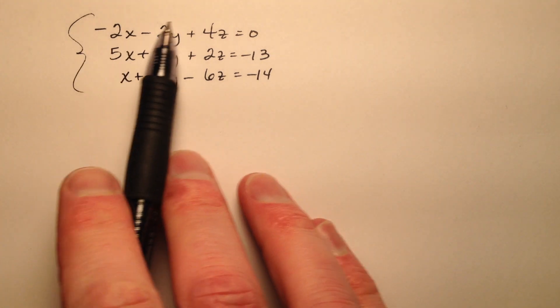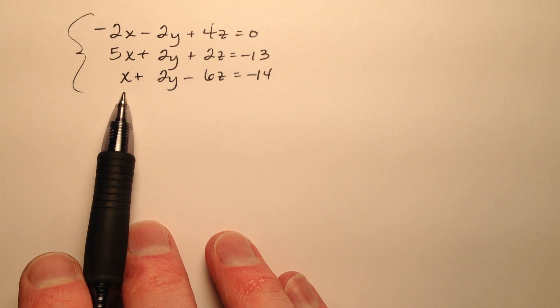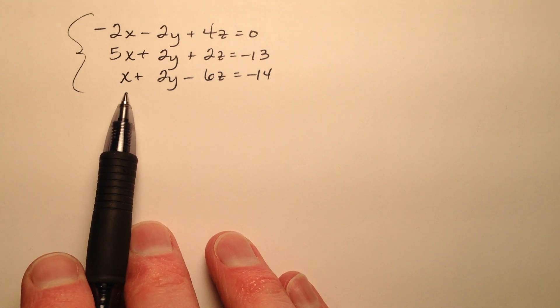In this example, we're going to solve this system with three equations and three unknown values, and we're going to do so by using substitution as the first step.